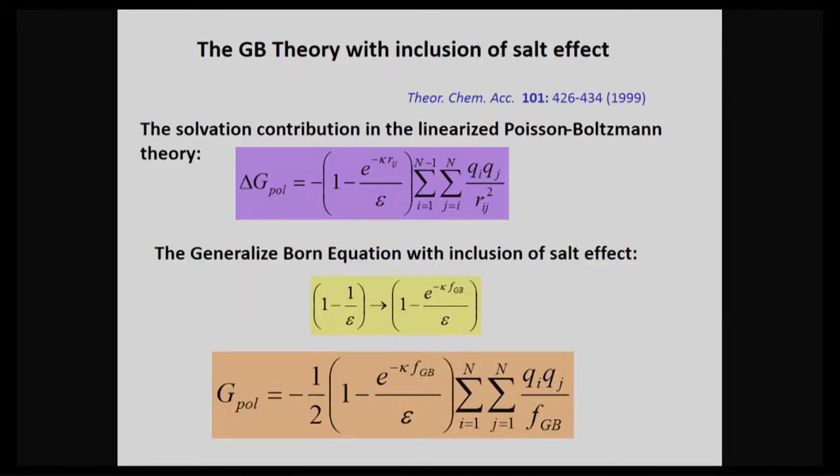You can also deal with electrolyte solution. People started to do that around 1999. And actually, the people who did this is in this university. David Case is one of the very important figures in our field. He's now in Rutgers also. You can use a kind of mapping to the linearized Poisson-Boltzmann theory, so that for the generalized Born, you can have a very similar equation to deal with the electrolyte solution.